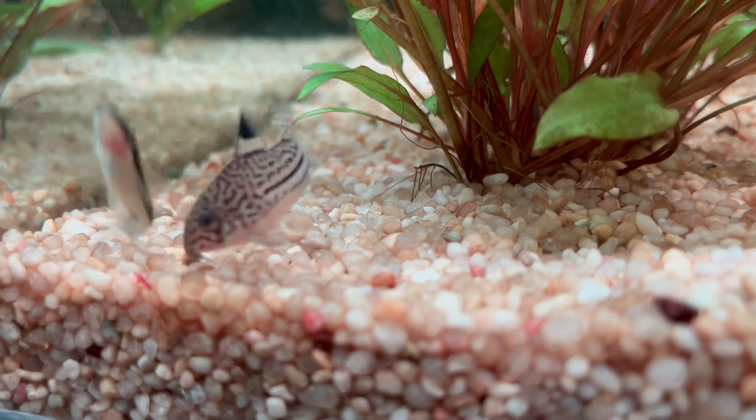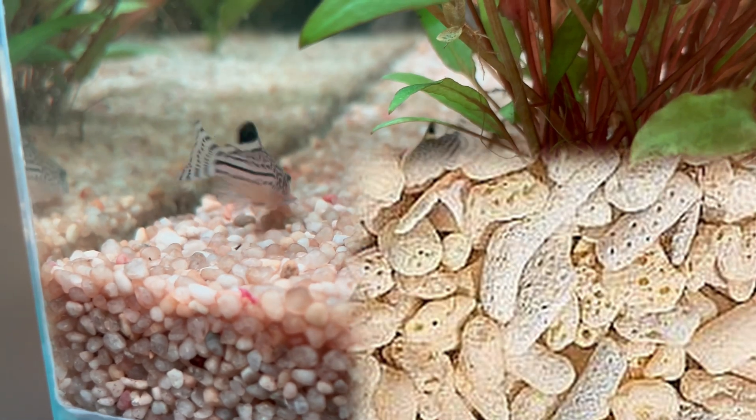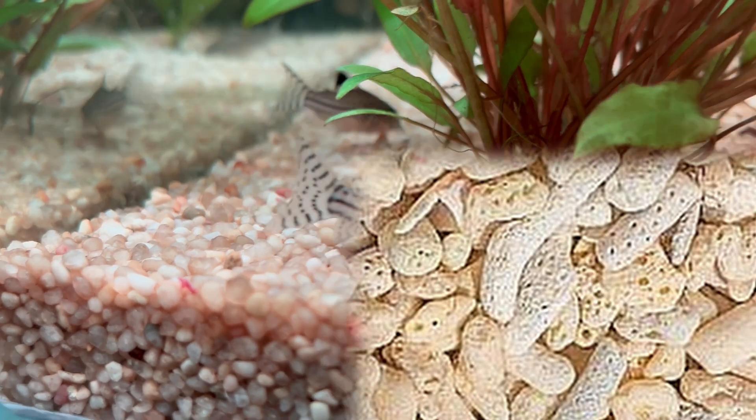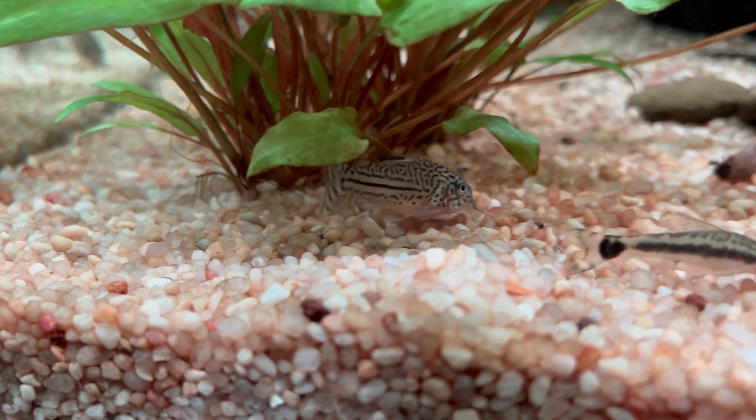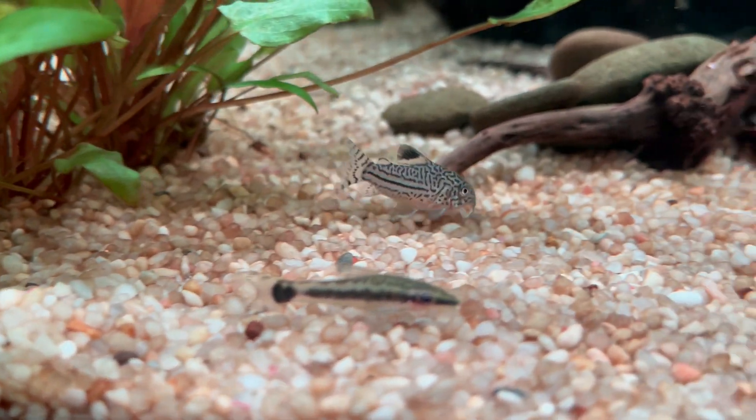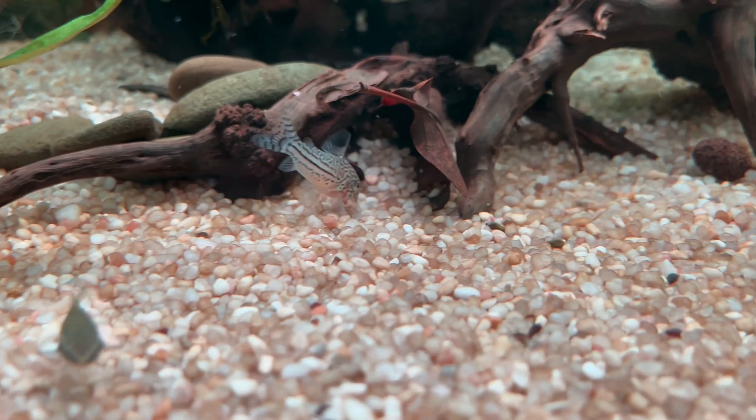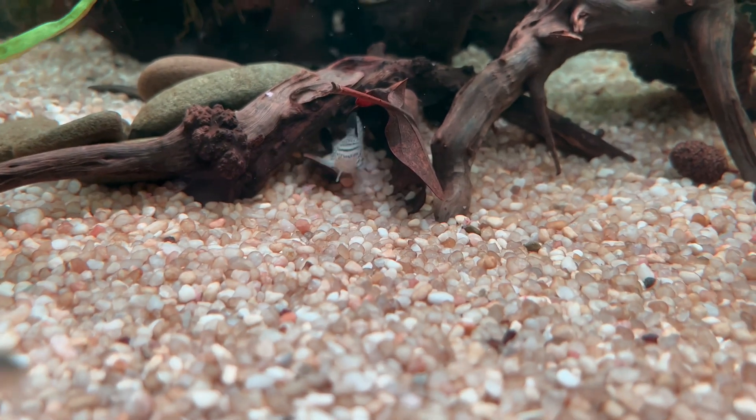To raise your KH, you can use again some crushed coral, you can mix it with your substrate. Or rocks like dolomites or limestone. But this will also raise the next parameter that we will talk about.